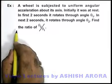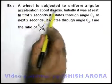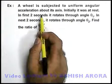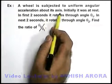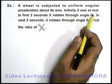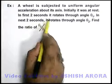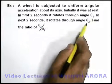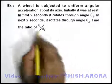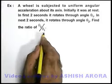In this example, we are given that a wheel is subjected to uniform angular acceleration about its axis, and initially it was at rest. In the first 2 seconds, it rotates through an angle theta 1, and in the next 2 seconds it rotates through an angle theta 2. We are required to find the ratio of theta 2 to theta 1.